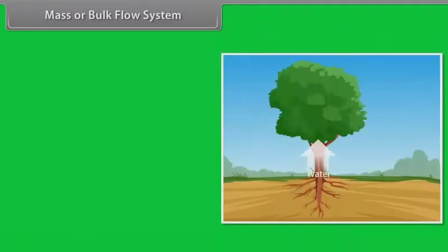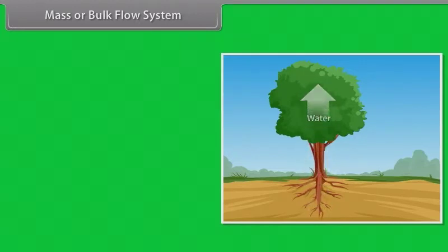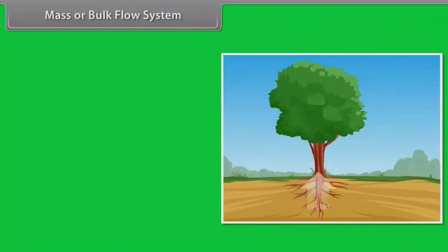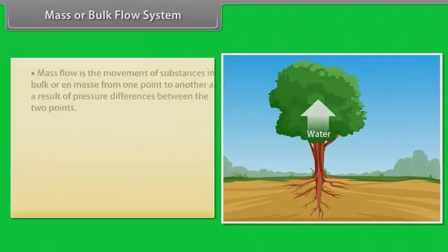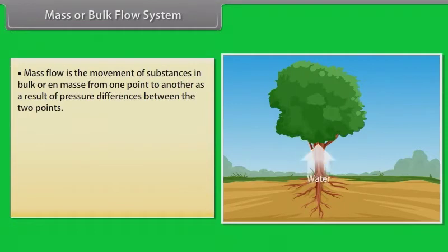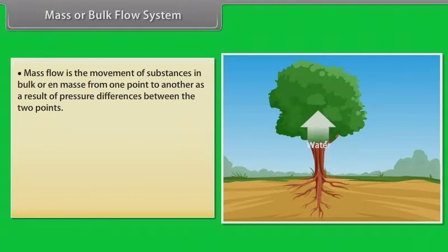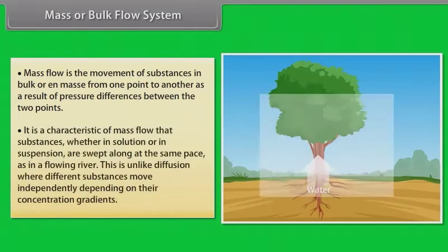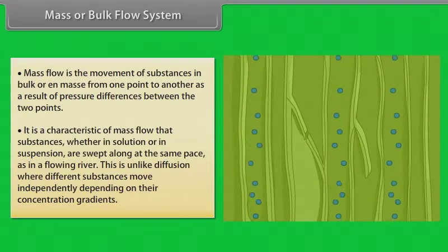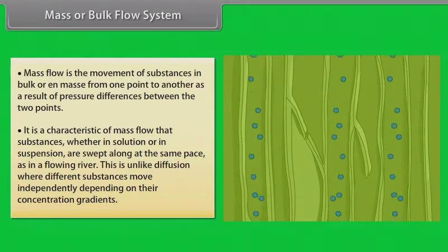In long trees, special long distance transport systems become necessary so as to move substances across long distances and at a much faster rate. Water, minerals, and food are generally moved by a mass or bulk flow system. Mass flow is the movement of substances in bulk or en masse from one point to another as a result of pressure differences between the two points. It is a characteristic of mass flow that substances, whether in solution or in suspension, are swept along at the same pace as in a flowing river.